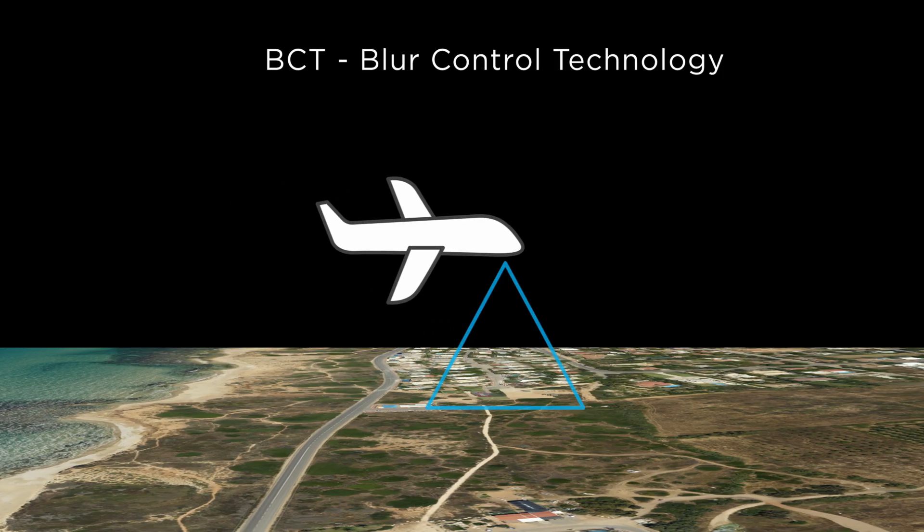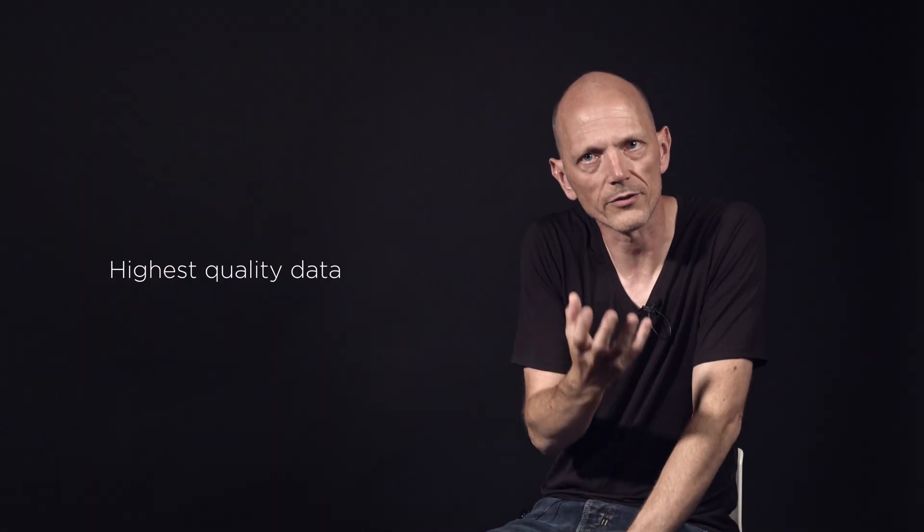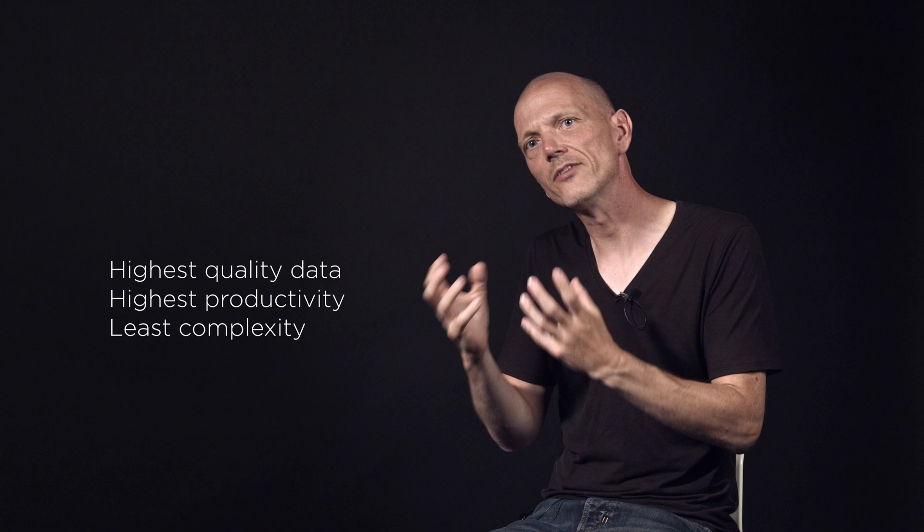With modern highly sensitive CMOS sensors, it's possible to capture very high quality images with very fast shutter speeds. At Phase One, we call this combination of ultra high speed shutters and high sensitivity CMOS sensors Blur Control Technology, or BCT. We don't need to compensate for forward motion — we control it directly by using very fast shutter speeds that enable the capture of high GSD data from fast moving aircraft without the need of complex mechanical or software-based FMC systems. Phase One's imaging components and solutions are designed to deliver the highest quality data with the highest productivity and the least complexity.